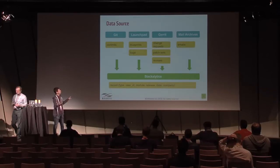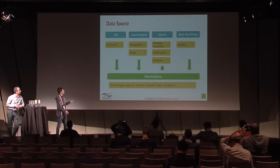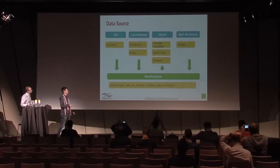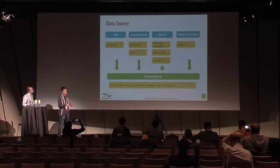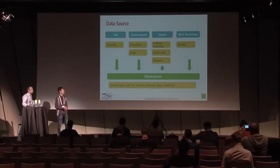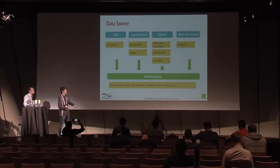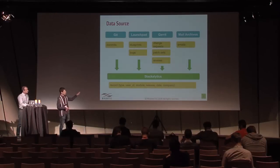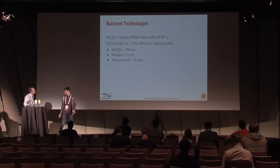We grab data from different sources: commits, blueprints, and bugs from Launchpad; change requests, patch sets, and reviews from Gerrit; and mails from mail archives. In Stackalytics we store this as a unified record. We decided not to implement a separate object model for every type of contribution — instead we store records with common attributes, which makes filtering easy on the front end.